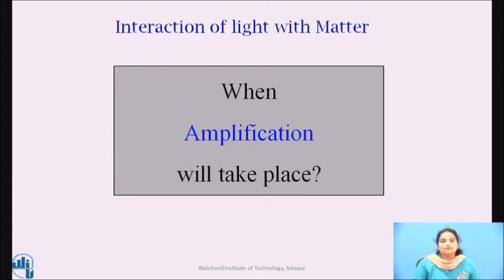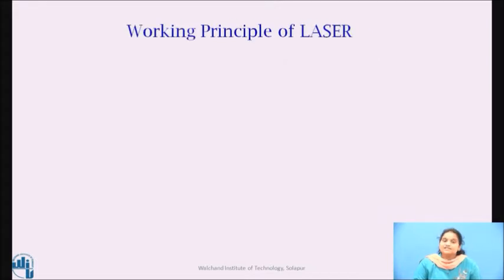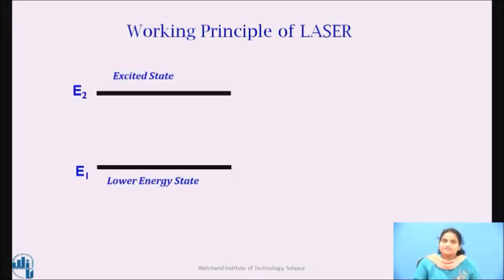A laser is a monochromatic coherent light source that depends on quantum processes for its operation. It is therefore necessary to first understand the quantum processes in order to understand the operation of laser. Let us consider a material medium which is composed of identical atoms. Atoms are characterized by many energy levels. But here, for the sake of simplicity, to understand, let us assume that the atoms of the material medium under consideration are characterized by only two energy levels.